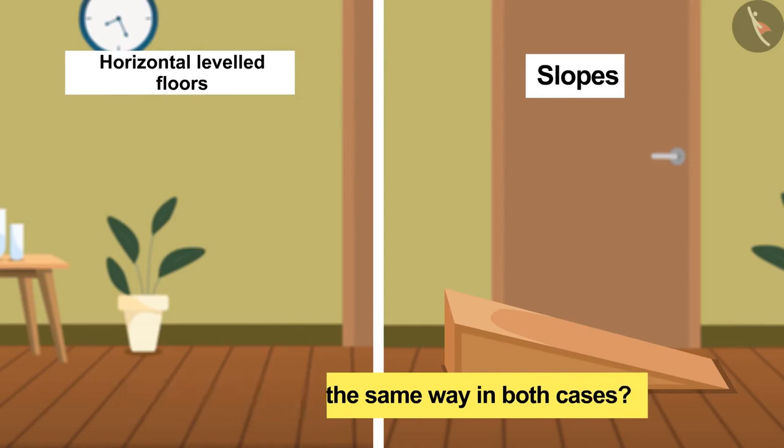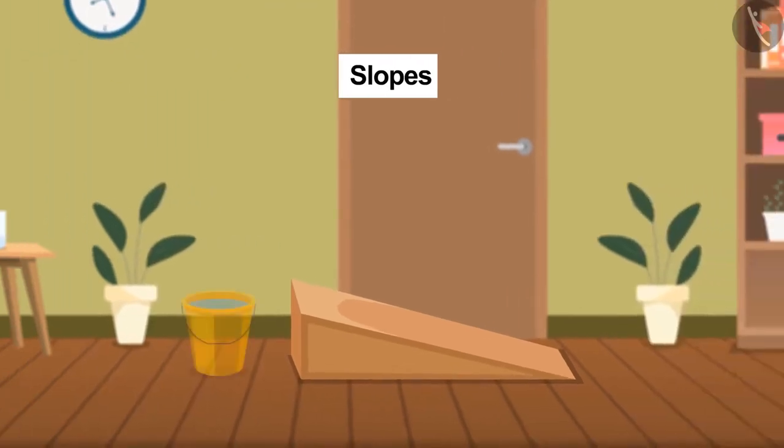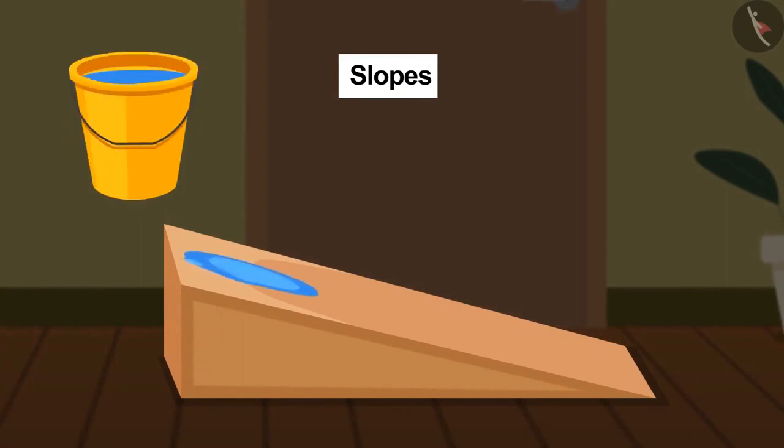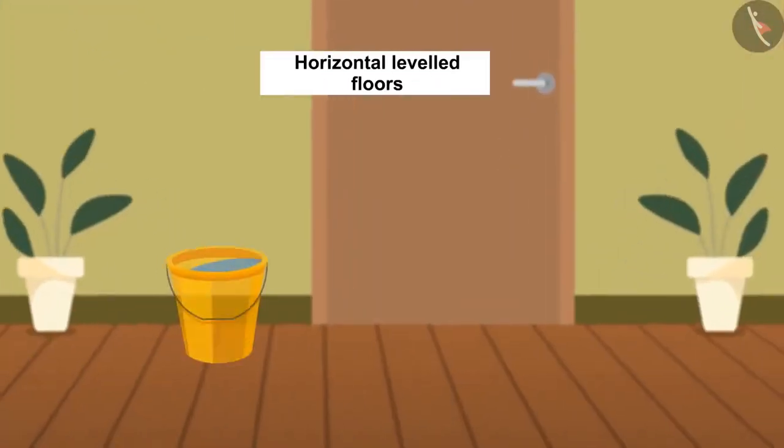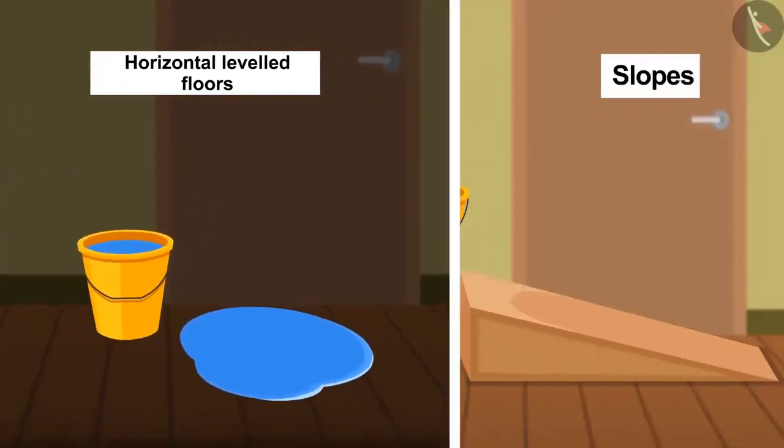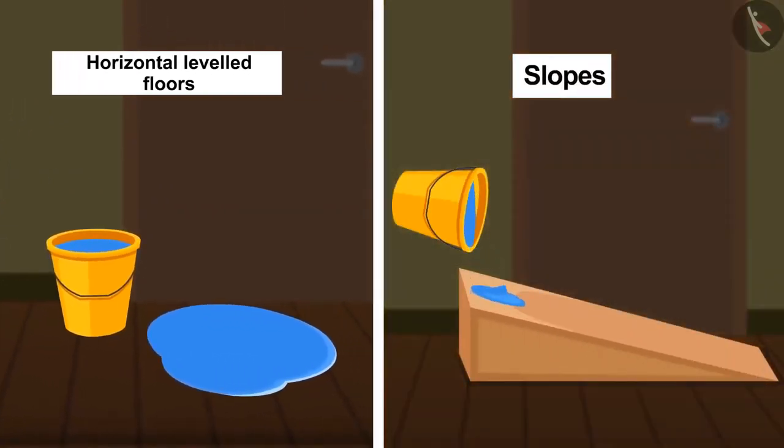The answer is no. On the slopes, the water flows till it reaches the bottom, and on the horizontal floor it will stop flowing after a while. In the case of slopes, no extra force is required, whereas despite applying force on the horizontal floor, water stops flowing as soon as the effect of that force tends to zero.